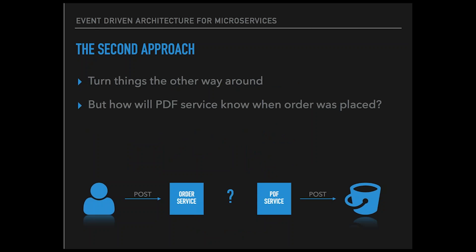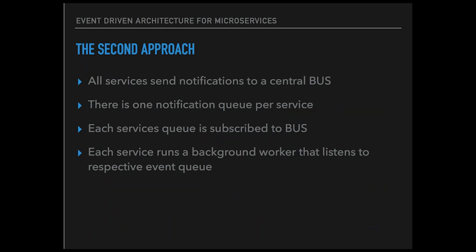In our second approach, we tried to turn things the other way around. The PDF service would not make updates to the order object directly, nor would the order service tell the PDF service to generate a document. And here events come into play. We decided we would have one event queue for each service, with all services sending events to one centralized bus — we use AWS for this. Each service queue would be subscribed to that centralized event bus, and each service would run a background worker that listens to its event queue and takes the necessary action when it receives a relevant event.